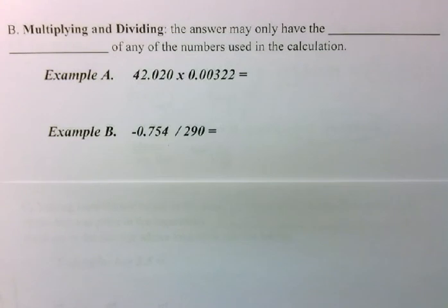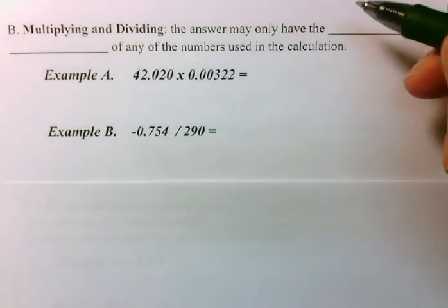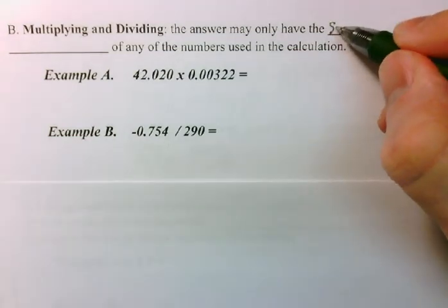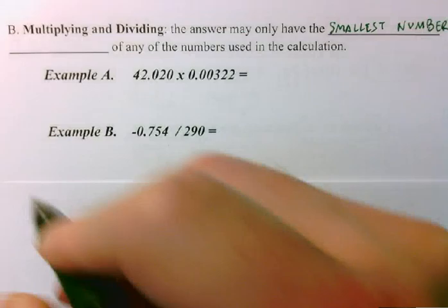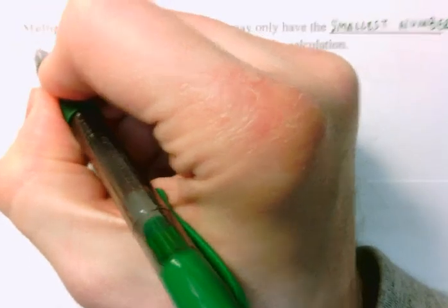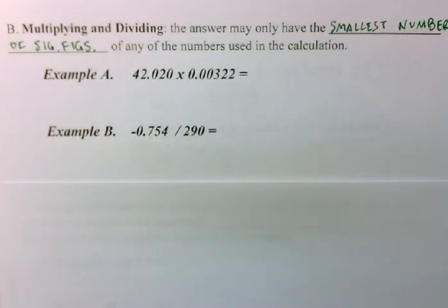Now the rule here is quite different from the one that we just covered. Remember that in addition and subtraction, the rule was interested in where the most precise sig fig was? Well, that's not the case here. In multiplying and dividing, we're interested in the number of sig figs that there are. So, to state the rule for multiplying and dividing, the answer may only have the smallest number of significant figures of any of the numbers used in the calculation.